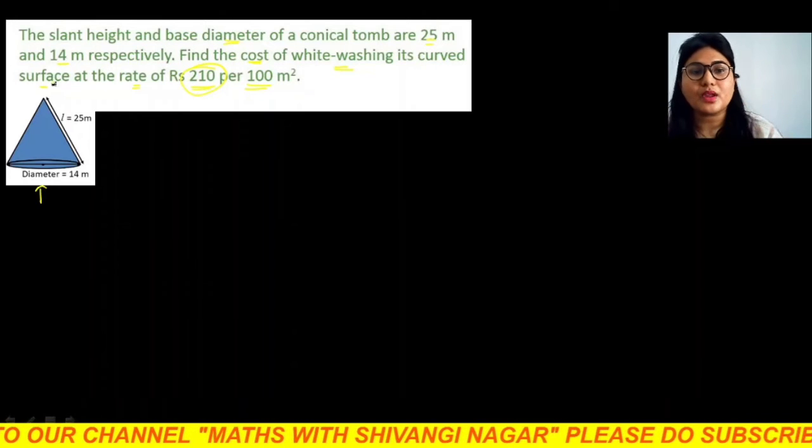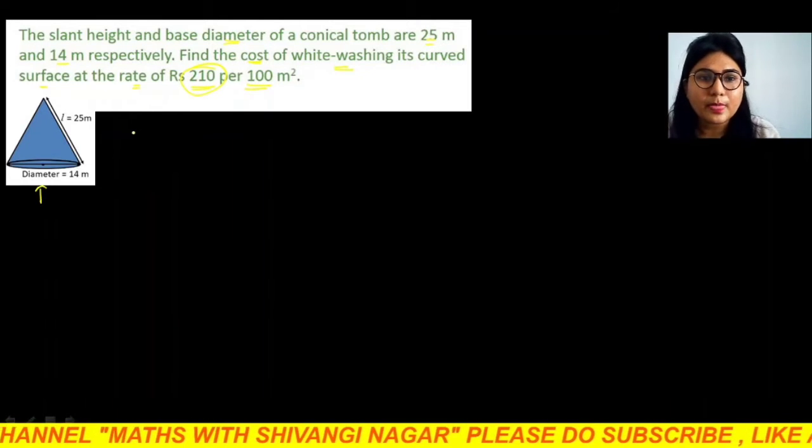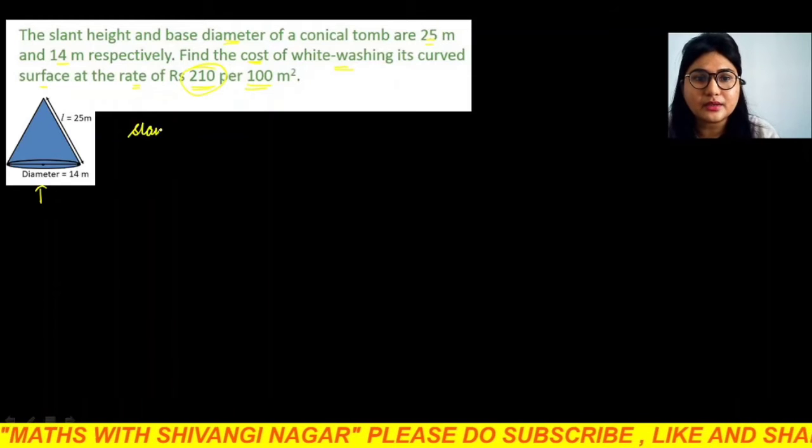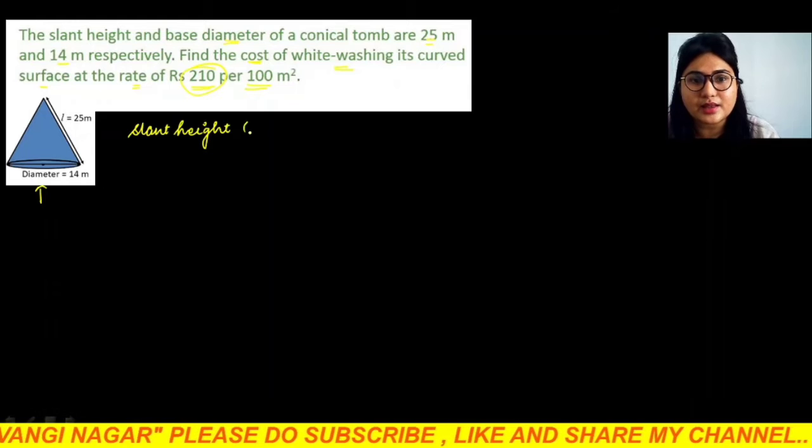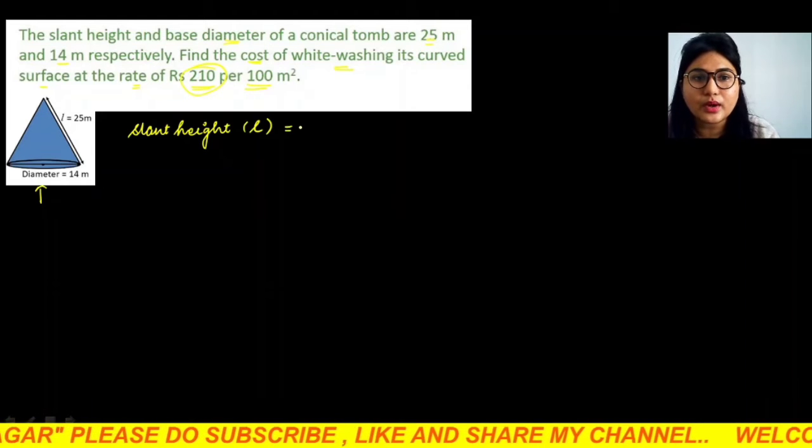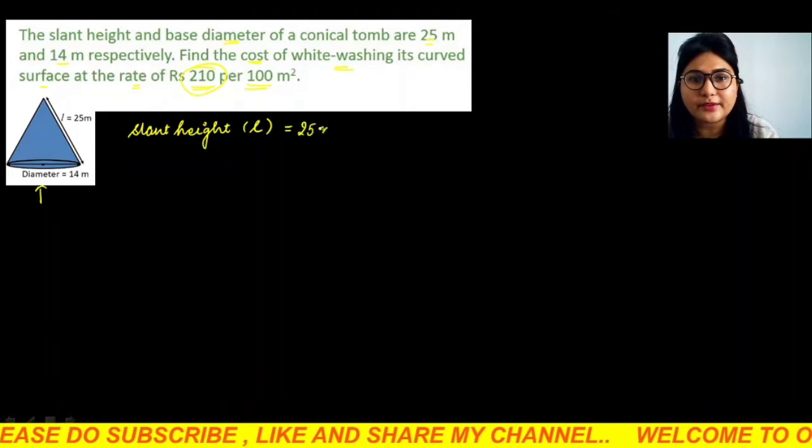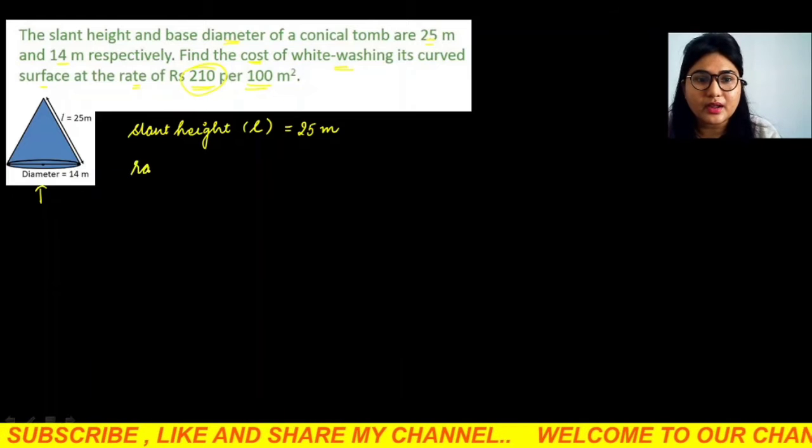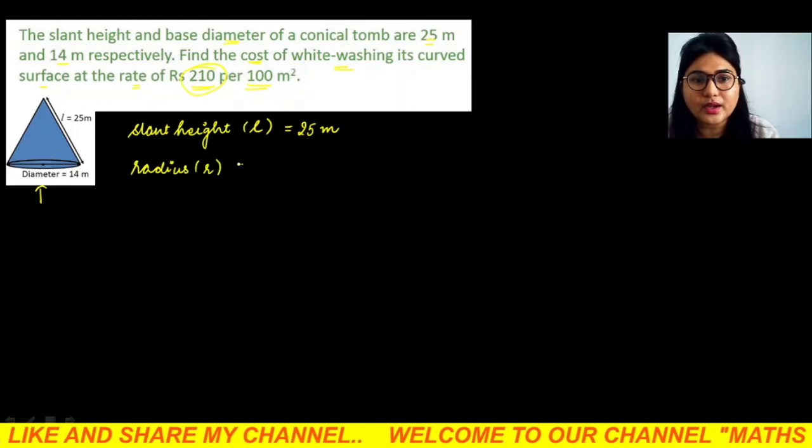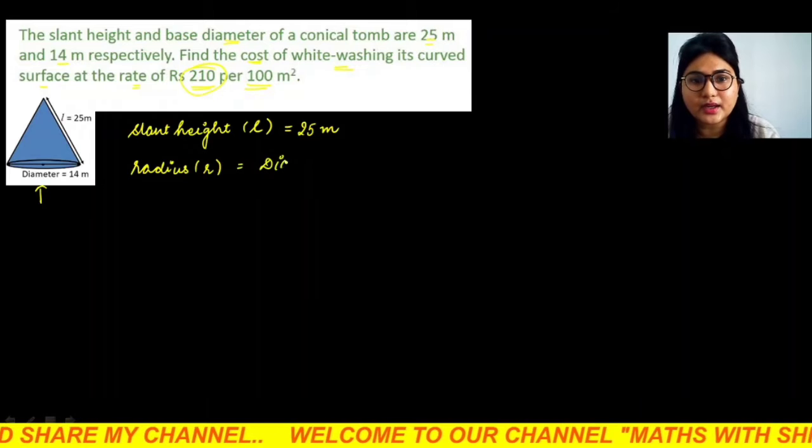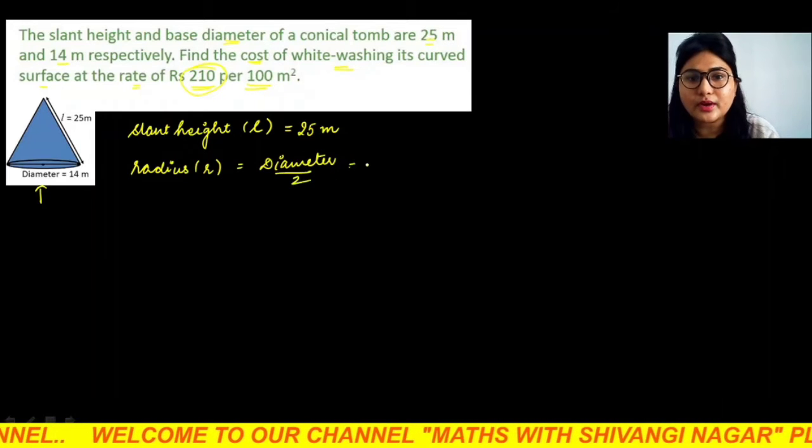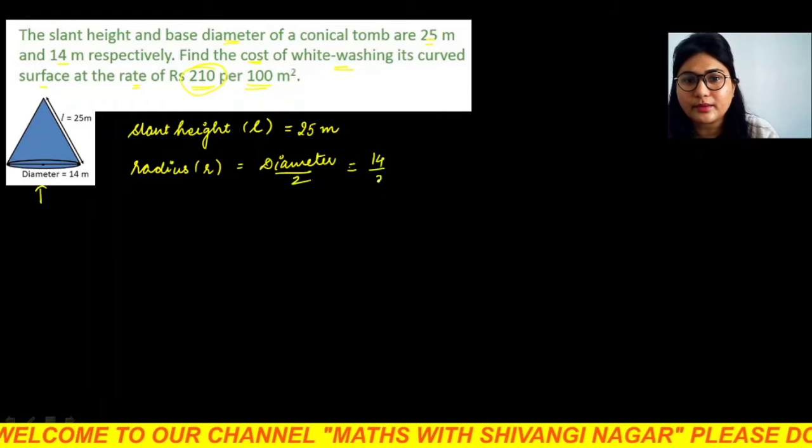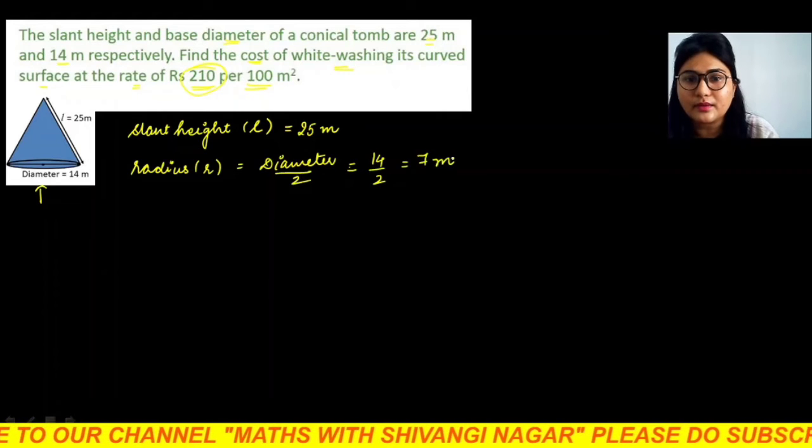So we will calculate the curved surface area of the cone. First of all, what we are given here? We are given here slant height, jisko hum L se denote karte hain. It is given to us how much? 25 meter. Radius jisko hum R se denote karenge, yeh hum calculate kar sakte hain diameter divided by 2 se. Diameter is given to us how much? 14 divided by 2, that is 7 meter. Clear?